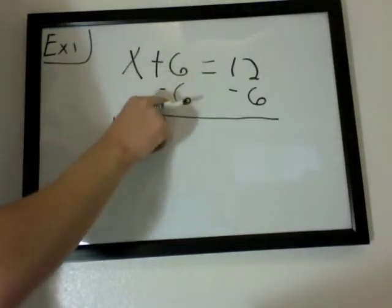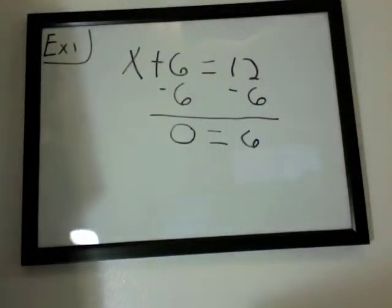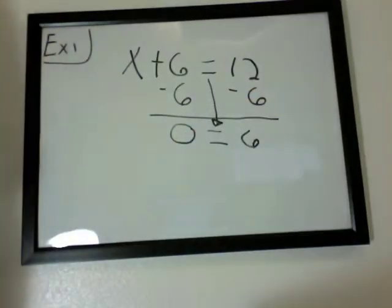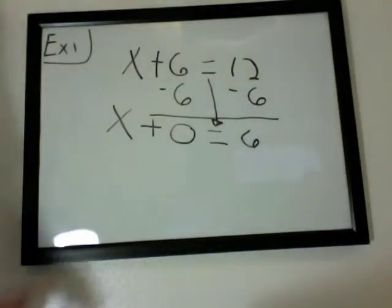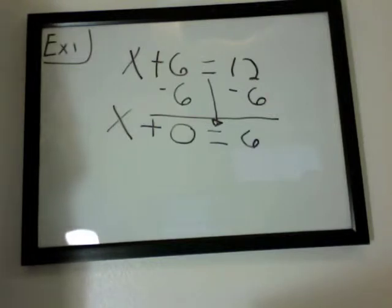Now 6 minus 6 would equal 0, and 12 minus 6 would equal 6. Don't forget to bring down your equal sign, and all other numbers that are left, or variables. This x here is a variable, it's an unknown number in our equation, so we're trying to solve for it.